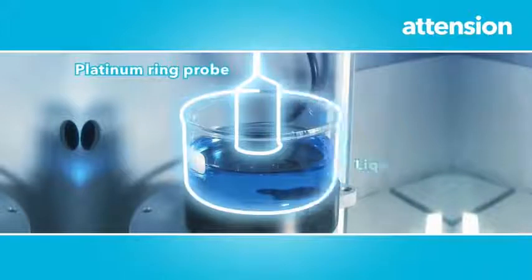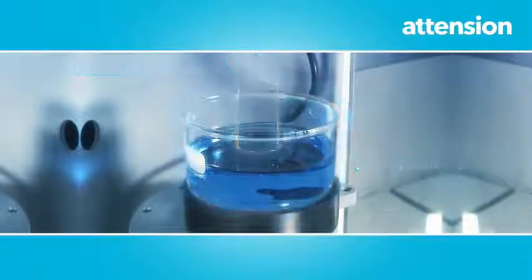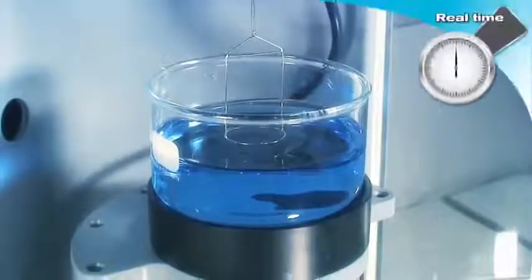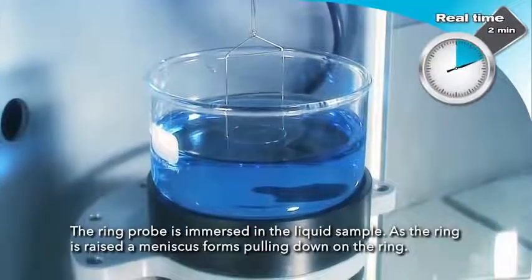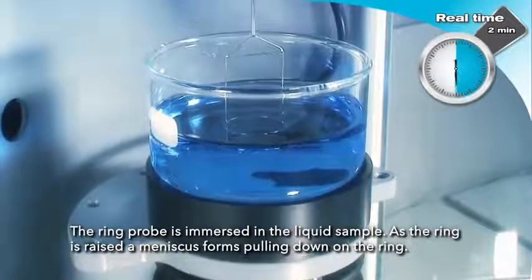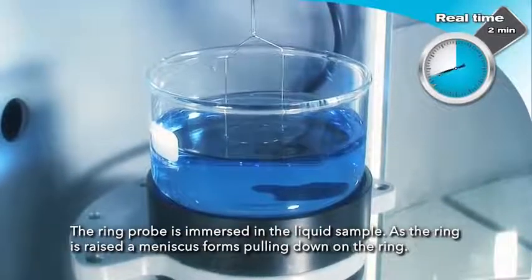A platinum ring probe hung on the balance is used to measure the surface tension of the blue liquid positioned on the sample stage. The ring probe is immersed in the liquid sample as the ring is raised and meniscus forms pulling down on the ring.